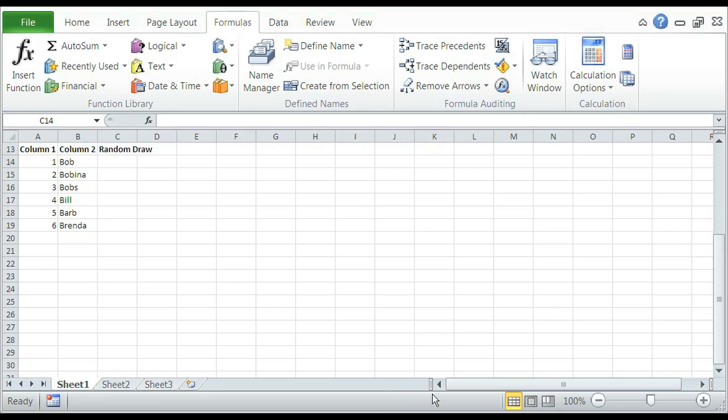So if we open up our Excel here, you will see I have a sample table ready. Column 1 is consecutive numbers 1 through 6, column 2 is random names, and column 3 says random draw.